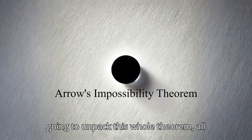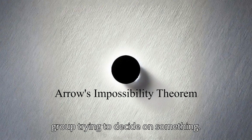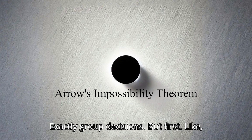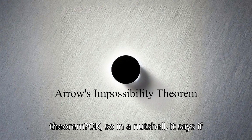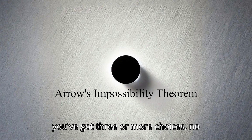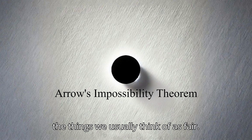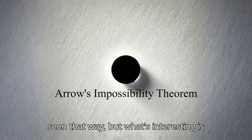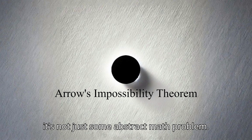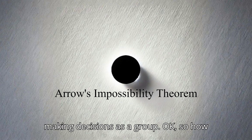We are too. So we're going to unpack this whole theorem — all the mind-boggling implications for decision-making, and not just in voting, but in any context where you've got a group trying to decide on something. Group decisions. What even is Arrow's Impossibility Theorem? In a nutshell, it says if you've got three or more choices, no voting system can perfectly satisfy all the things we usually think of as fair.